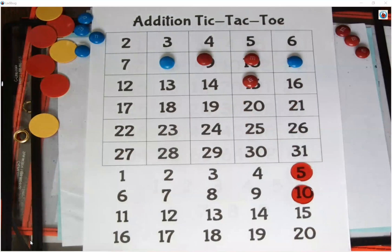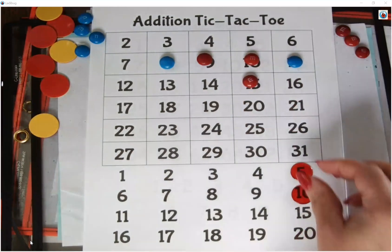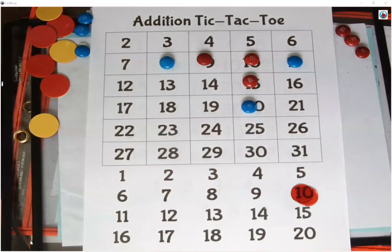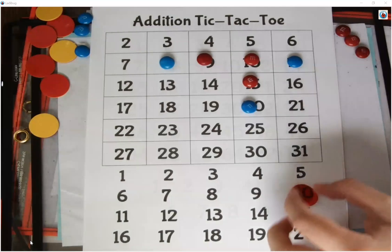I am going to do ten plus ten equals twenty and block him there. If you could see his face and see how much he's thinking, it's kind of funny. There's steam coming out of his ears. All right, move one of those over.